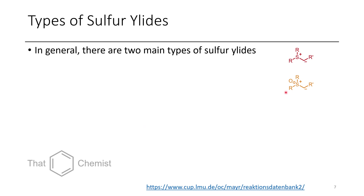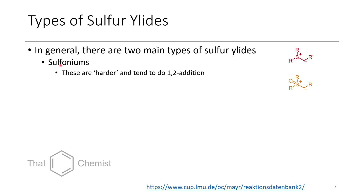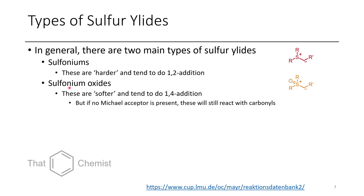There are two different types. There's the typical sulfonium ylid, which is just an alkylated thioether that's been deprotonated. However, you can also have the corresponding sulfoxide derivative. Sulfoniums tend to be harder and do 1,2-addition — that's the typical sulfonium ylid. However, if you use the sulfonium oxide ylid, these are softer and tend to do 1,4-addition, if possible.